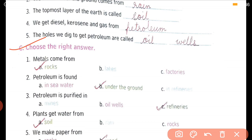First one, metals come from what? Rocks. We get metals from rocks. Second, petroleum is found under the ground, in sea, or in refineries? Petroleum we get under the ground.